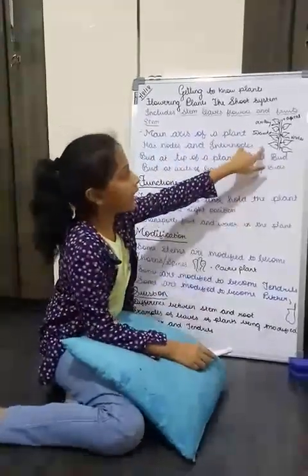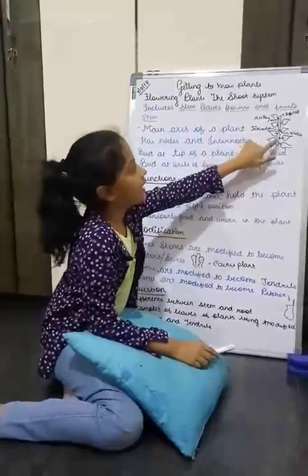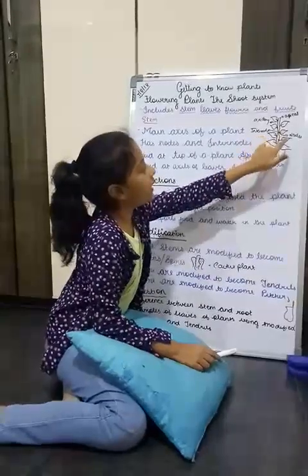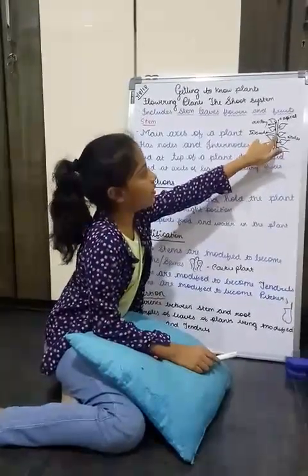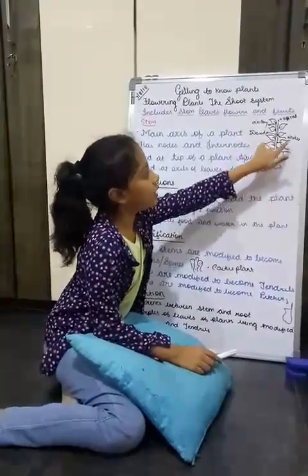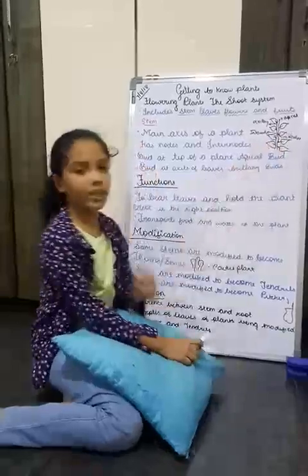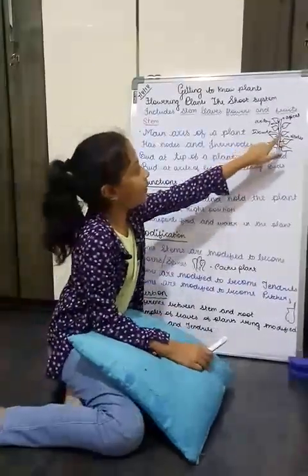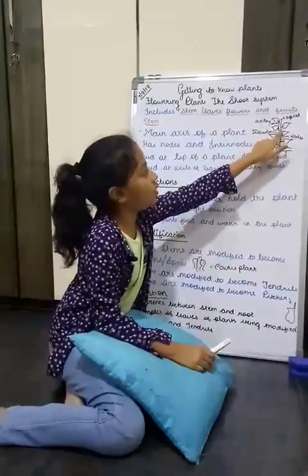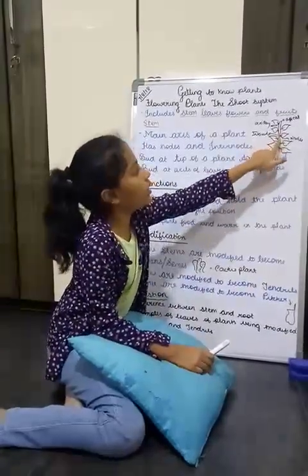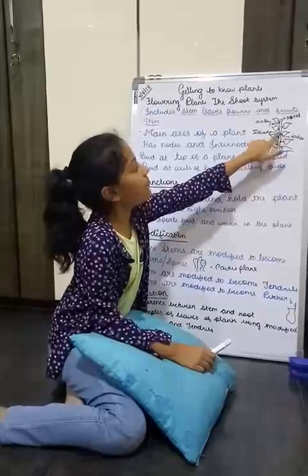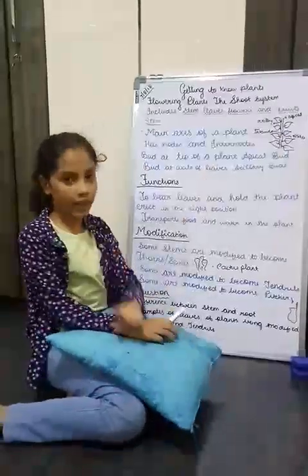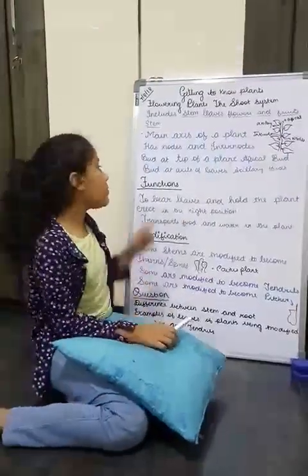As in this diagram, these are the leaves and the leaves are growing from these points. So these points are known as the nodes. And between these two nodes there is a distance, so these distances are known as internodes.